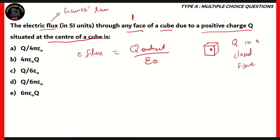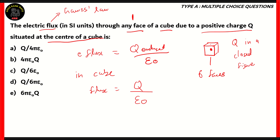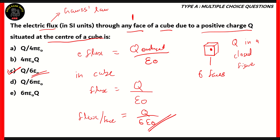This is the formula for electric flux. In our cube, the charge enclosed is Q, so we write that as the numerator and epsilon 0 as the denominator, since the charge is in free space. However, a cube has six faces and we need the flux through any one face. So we divide the total flux by the number of faces, giving us Q over 6 epsilon 0. Therefore, option C — Q over 6 epsilon 0 — is the right answer.